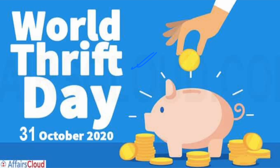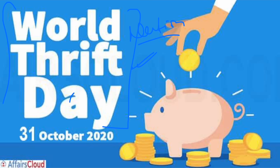World Thrift Day is observed on 31st October. It promotes saving and financial security of individuals and the nation. It also raises awareness among people to save their money in banks rather than keeping it at home — so that they earn interest. Remember, the First International Thrift Congress was held in Milan, Italy in 1924, where 31st October was declared World Thrift Day.